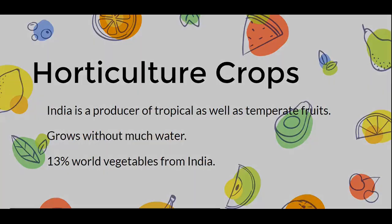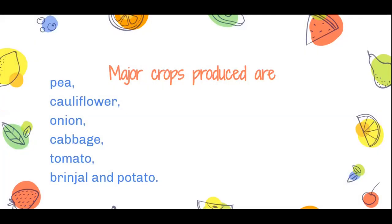The major vegetable crops produced in India are pea, cauliflower, onion, cabbage, tomato, brinjal, and potato. When we come to fruits, India grows a wide variety across different states.